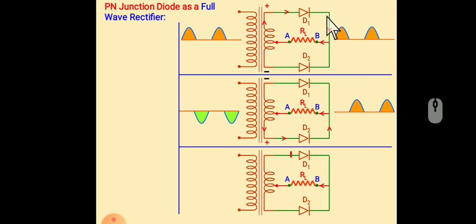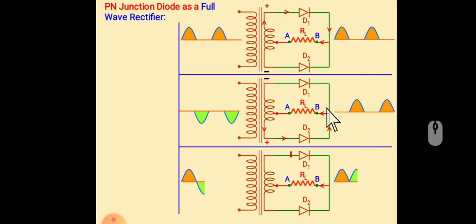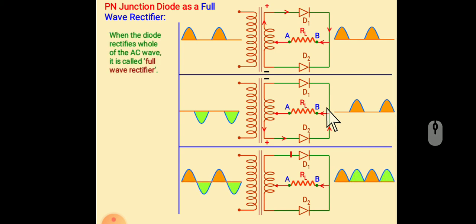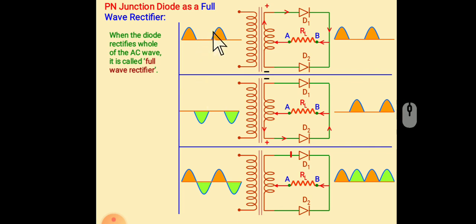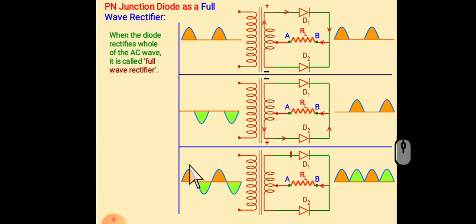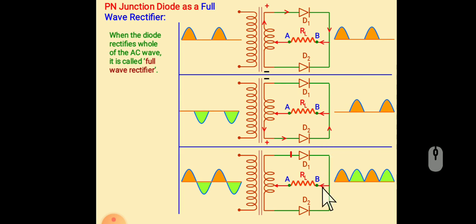So we get output for D1 and D2. This is the output for D1 and this is the output for D2. So if we add both input and output, then the input becomes a sinusoidal wave and the output is a direct current.